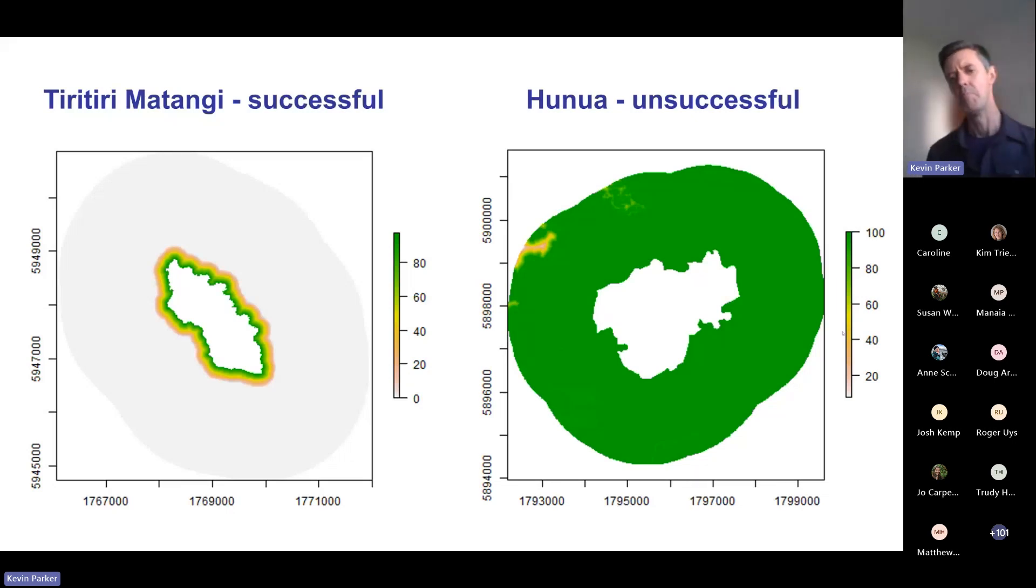At the other end of the spectrum, we released 40 popocatia into the Hunua in 2003. The site was about 600 hectares of intensively managed habitat to protect a remnant population of kokako, but it was surrounded by an otherwise unmanaged habitat totaling around 25,000 hectares. That translocation failed.